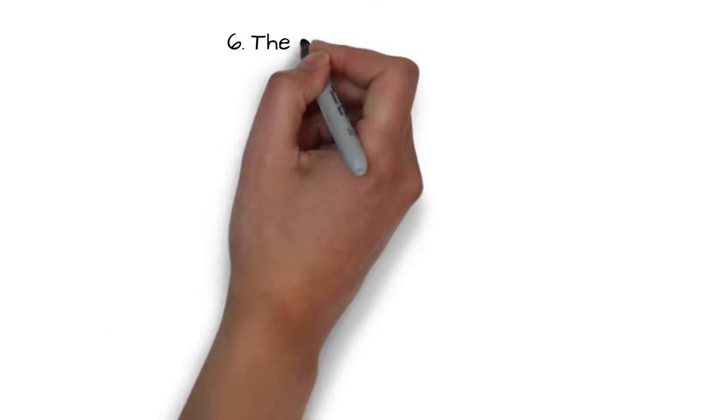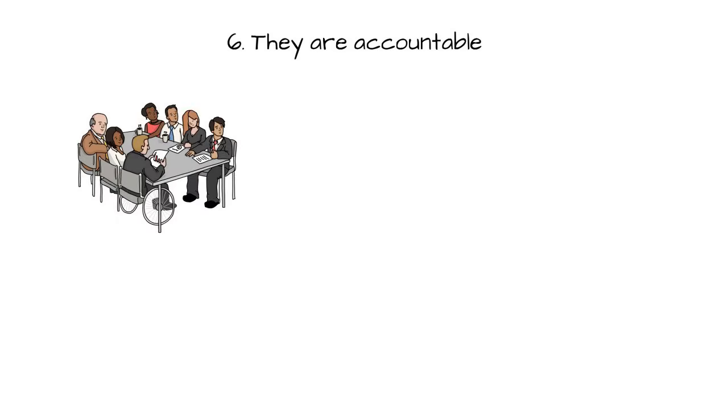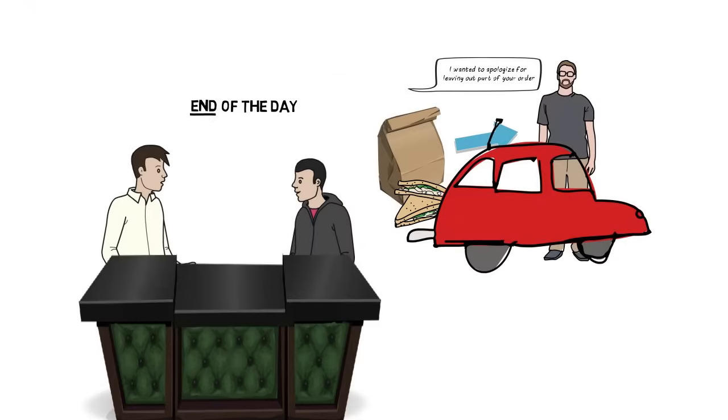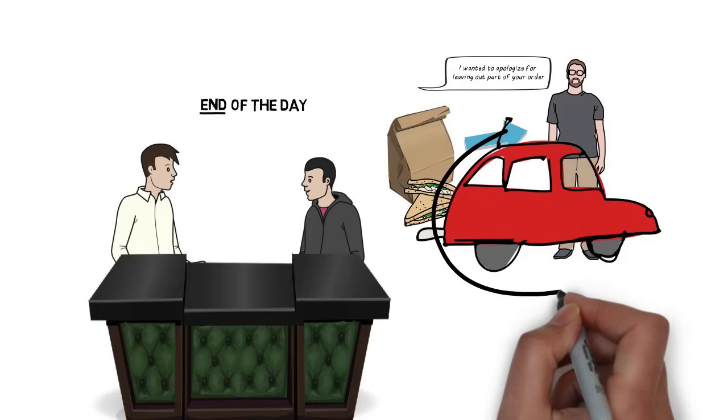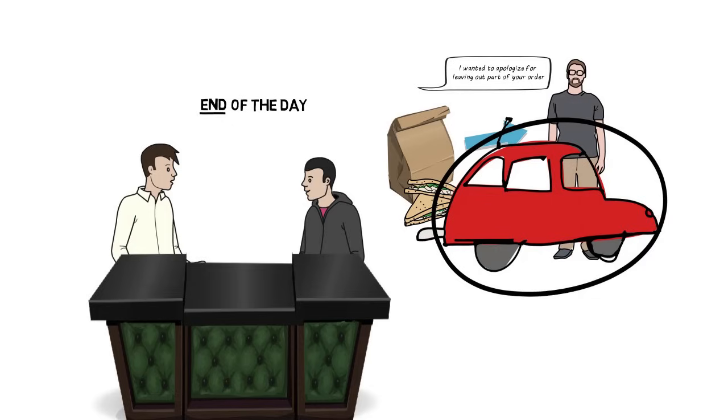Number six, they are accountable. Your team's mistakes are your mistakes because you are their leader. Remember the restaurant example? When we left out part of the customer's order, the owner and I personally went to deliver what we missed.